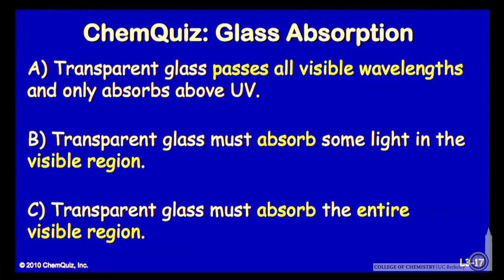Let's look at an argument for each of the answers. A: transparent glass passes all visible wavelengths and only absorbs above the UV. Or B: transparent glass must absorb some light in the visible region. Or C: transparent glass must absorb the entire visible region. Think about those alternatives and make another selection.